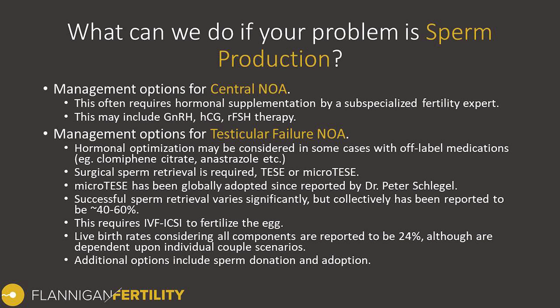Looking at the surgical literature, successful sperm retrieval rates are somewhat variable but most often range between 40 and 60%. If we are able to retrieve sperm, we can use it for IVF with ICSI — taking a single sperm, injecting it into a single egg to achieve fertilization. The resulting embryo is cultured in the lab for three to seven days and then transferred into the uterus of your partner to try to achieve a clinical pregnancy and a live birth.